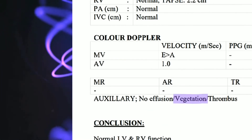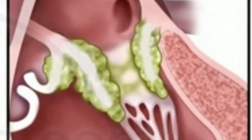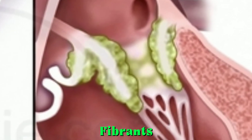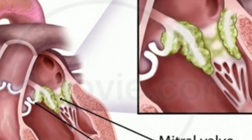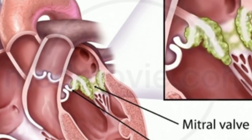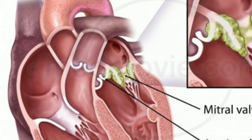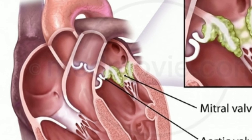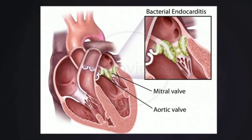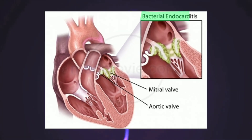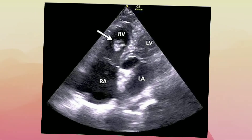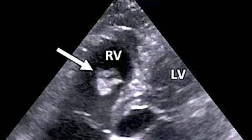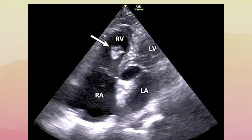Next is vegetation. Vegetations are masses composed of fibrin, platelets, and infecting organisms held together by agglutinating antibodies produced by the bacteria. They are generally seen on the heart's valves, in conditions like endocarditis. And last is thrombus — a clot of blood cells which can be present in any chamber of the heart.